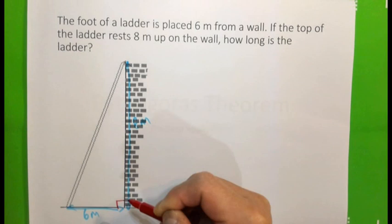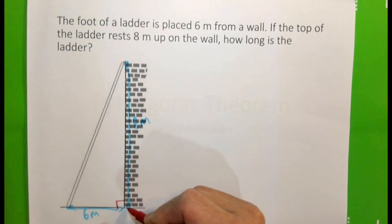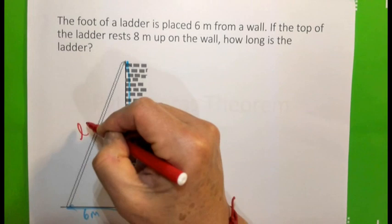How long is the ladder? We know that this should be actually a right angle. The angle of the wall and the floor is a right angle. Therefore, we can use Pythagoras.